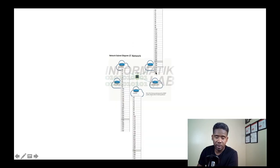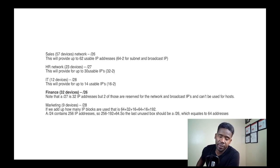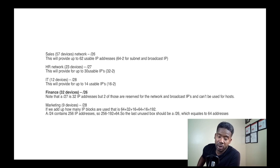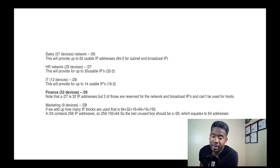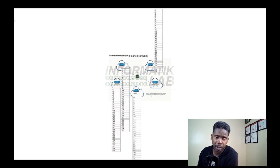For the IT department, we put /28 on the diagram. Next, the Finance department gets /26. Note that /27 only gives 30 usable addresses — two addresses are reserved for the network and broadcast and cannot be used for hosts — so Finance with 32 devices requires /26.